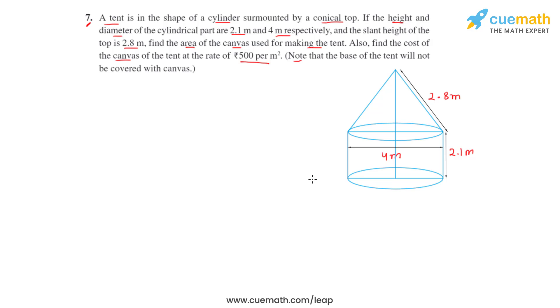The diameter of the cylindrical part is 4 meters, and the slant height of the conical top is 2.8 meters. Now, from the given figure, it's clear that the diameter of the cylindrical part is equal to the diameter of the conical part, as the cylindrical part is surmounted by the conical part.